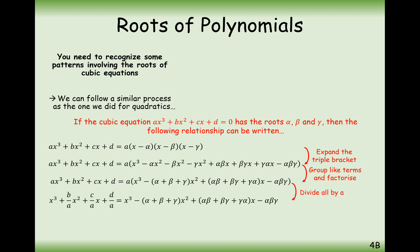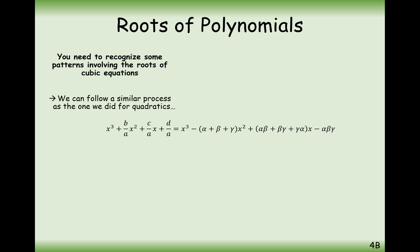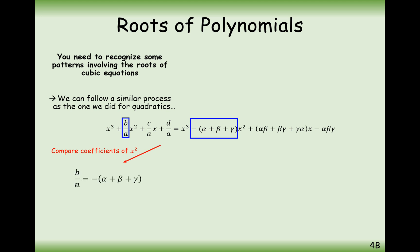Now I can compare the left and right-hand sides with each other. Looking at the x² term: on the left-hand side we have b/a, and on the right-hand side what's in front of x² is −(α + β + γ). So we get the formula: −b/a = α + β + γ. We move the negative to the other side — that's the preferred way of remembering it.